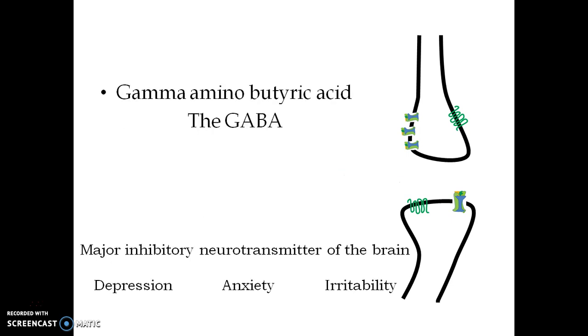GABA, that is gamma-aminobutyric acid is the inhibitory neurotransmitter of brain.